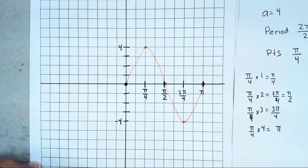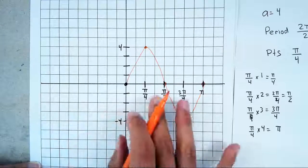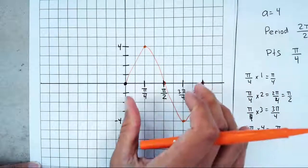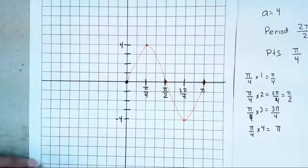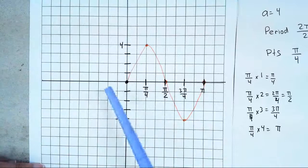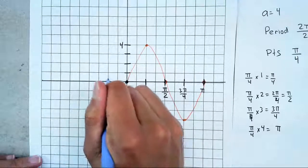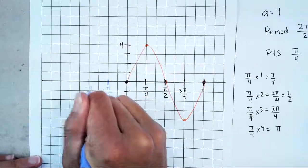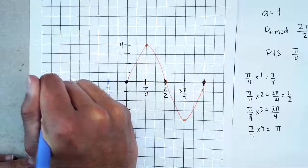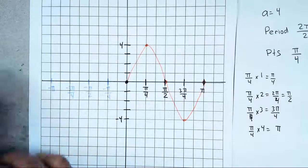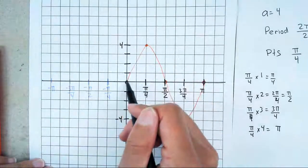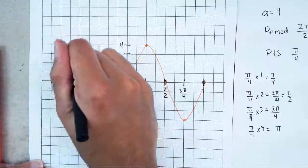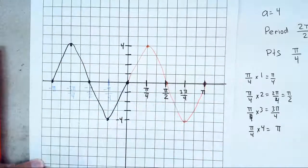Sometimes teachers will ask you to graph two periods. If you need to graph two cycles, you could multiply by 5, 6, 7, 8 and continue the pattern. Or, if one period uses positive values, make all those values negative for the other period: negative π/4, negative π/2, negative 3π/4, and negative π. Then continue the pattern — up, middle, down, middle, up, middle — and those are your two periods for sine.